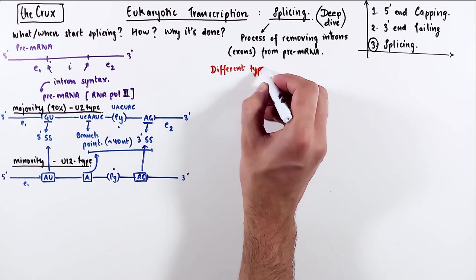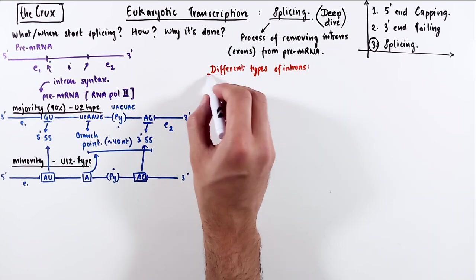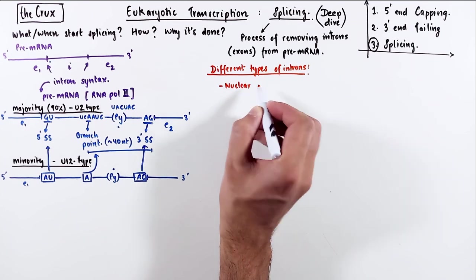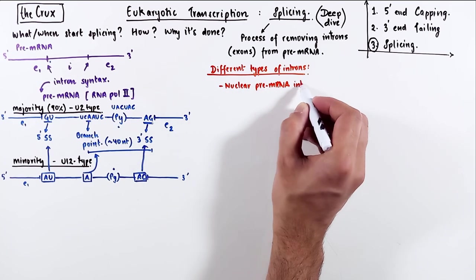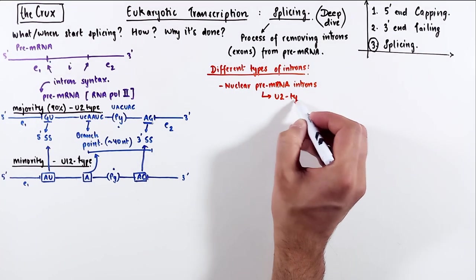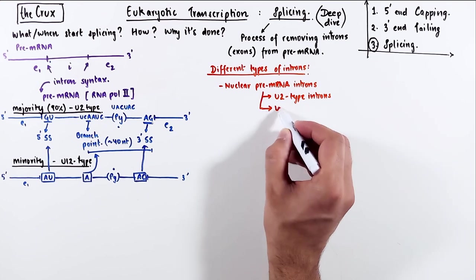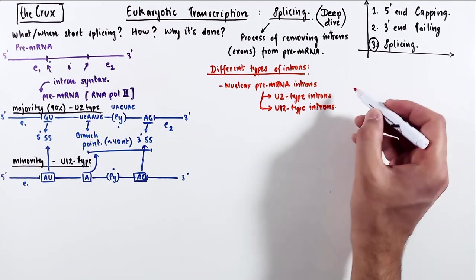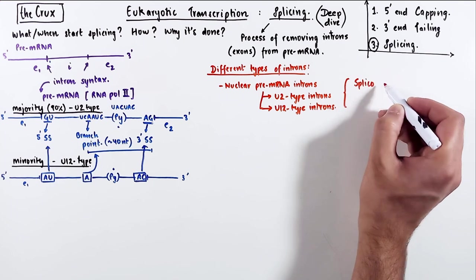I want to expand your knowledge on the fact that there are many types of introns in general. We have the nuclear pre-mRNA introns, which are the U2-type and the U12-type introns that we just saw. These specific introns are recognized by a set of proteins that form spliceosome.